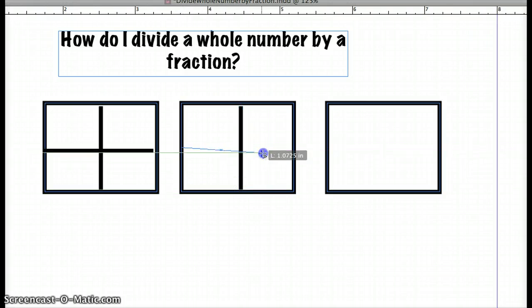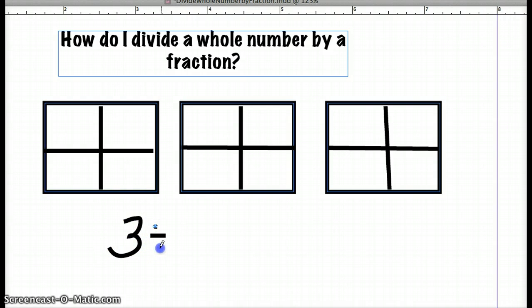And each of those pizzas are divided into fourths. Really what we're going to find out here is how many slices of pizza there are. So three pizzas divided by one-fourth is going to tell us how many slices that there are.